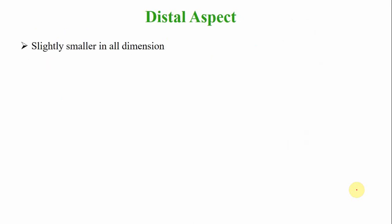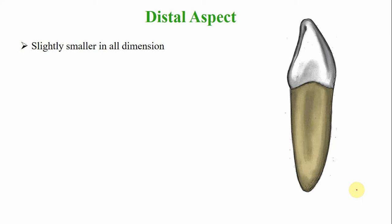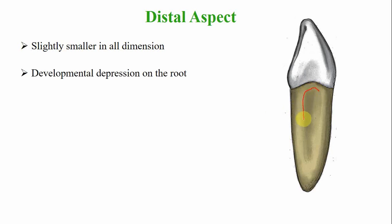From the distal aspect, the tooth is smaller in all dimensions. A developmental depression is also present on the root surface. The cervical line shows less curvature compared to the mesial aspect, which is common to all anterior teeth.